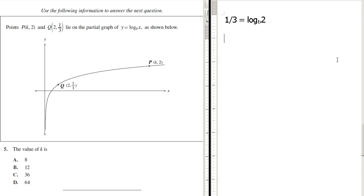And we can figure out b by again raising these as exponents to base b. The log base b will cancel out and we'll just have b to the power of 1/3 equaling 2. And then to find b, we'll just raise each side to the power of 3.